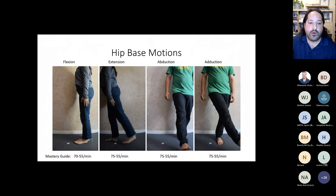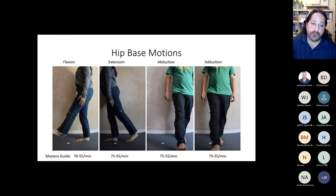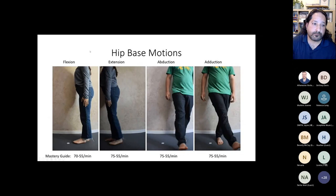Now the hip, which is very similar to the shoulder: flexion forward, extension backward, abduction out to the side, adduction across midline. We can also do hip flexion sitting down and a full rotation.